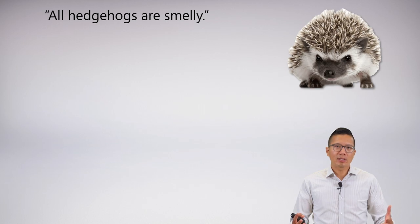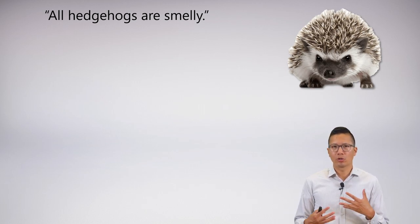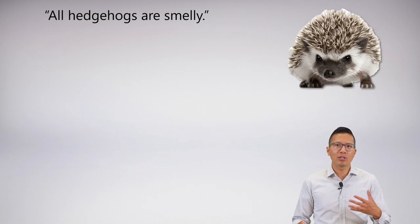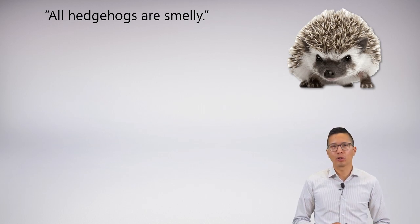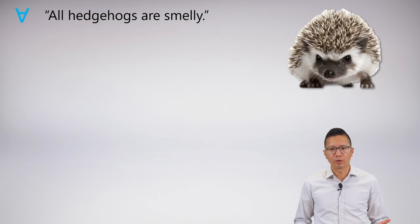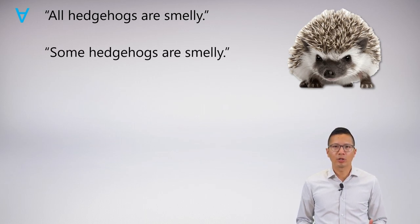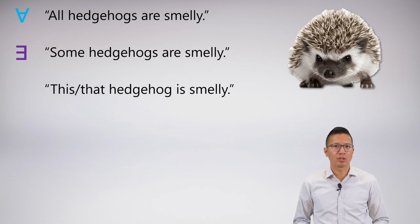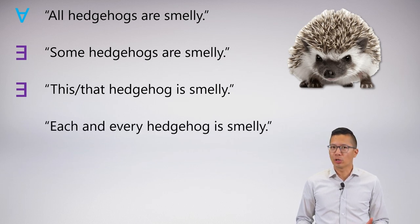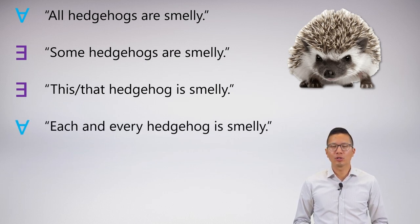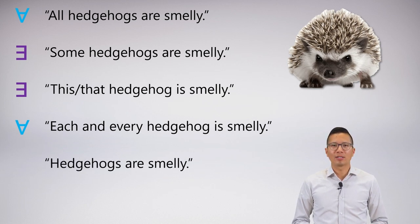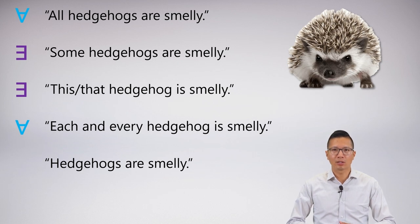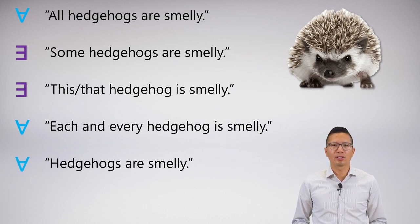When we're looking at a sentence, one of the first things we want to do is determine whether it's a universal or an existential. If I say 'all hedgehogs are smelly,' clearly this is a universal statement. And if I say 'some hedgehogs are smelly,' clearly that's an existential statement. If I say 'this or that hedgehog is smelly' and I'm gesturing at a single one, I mean that in the existential sense. 'Each and every hedgehog is smelly' is just a variant of the universal. And 'hedgehogs are smelly' — using the zero article and making a general claim — this is a universal.